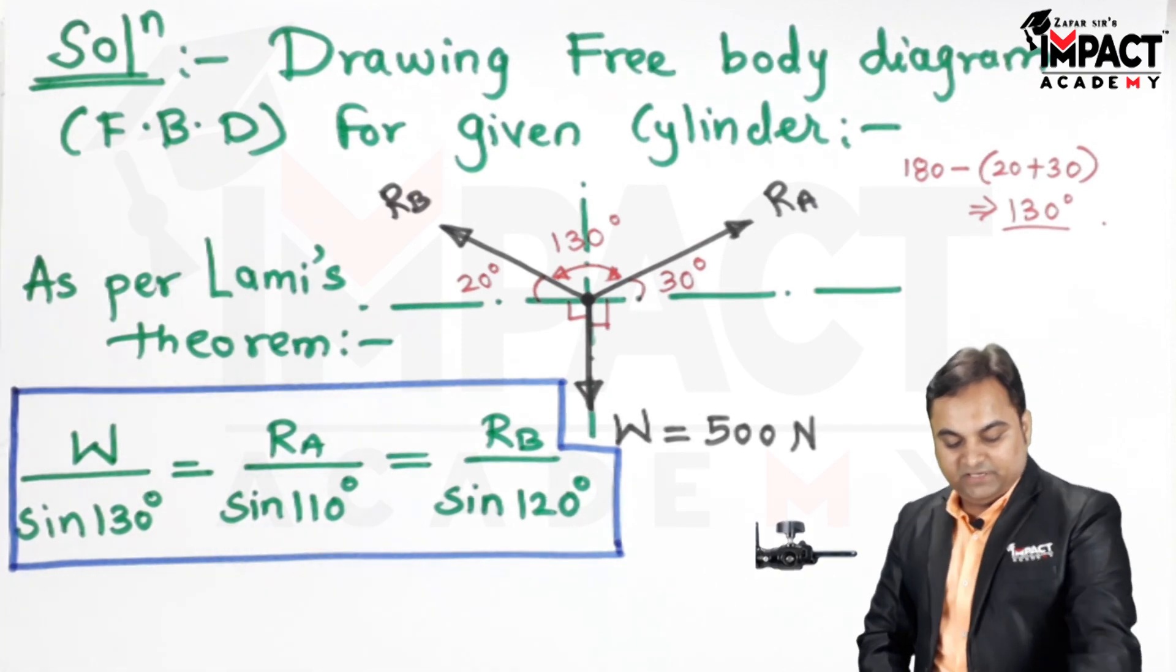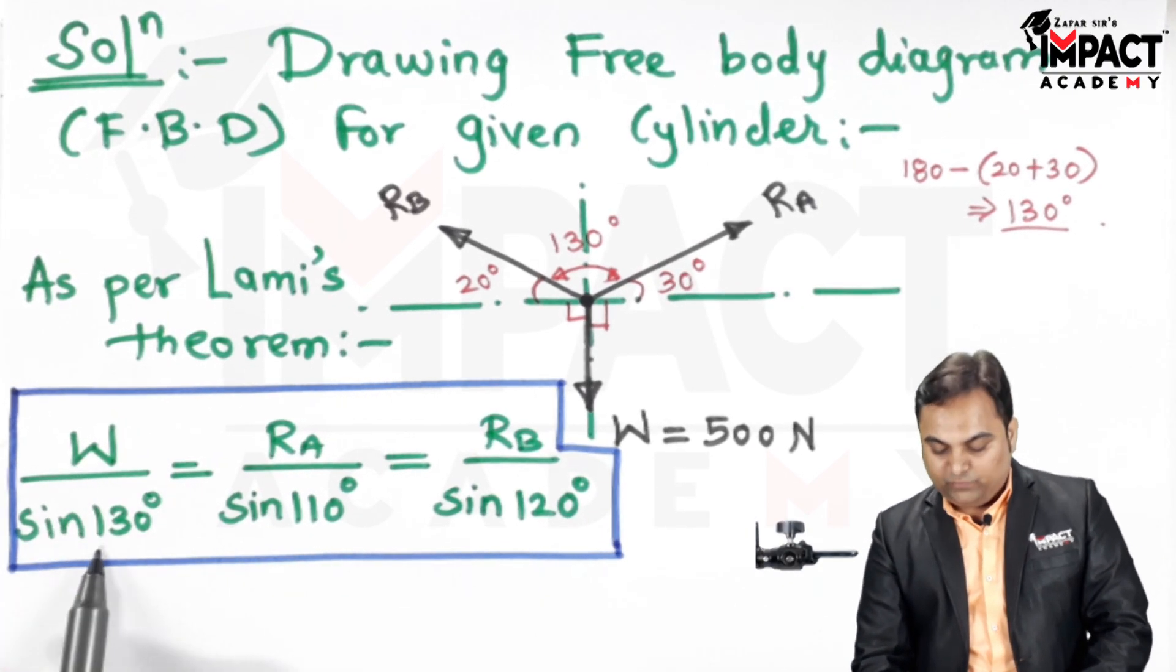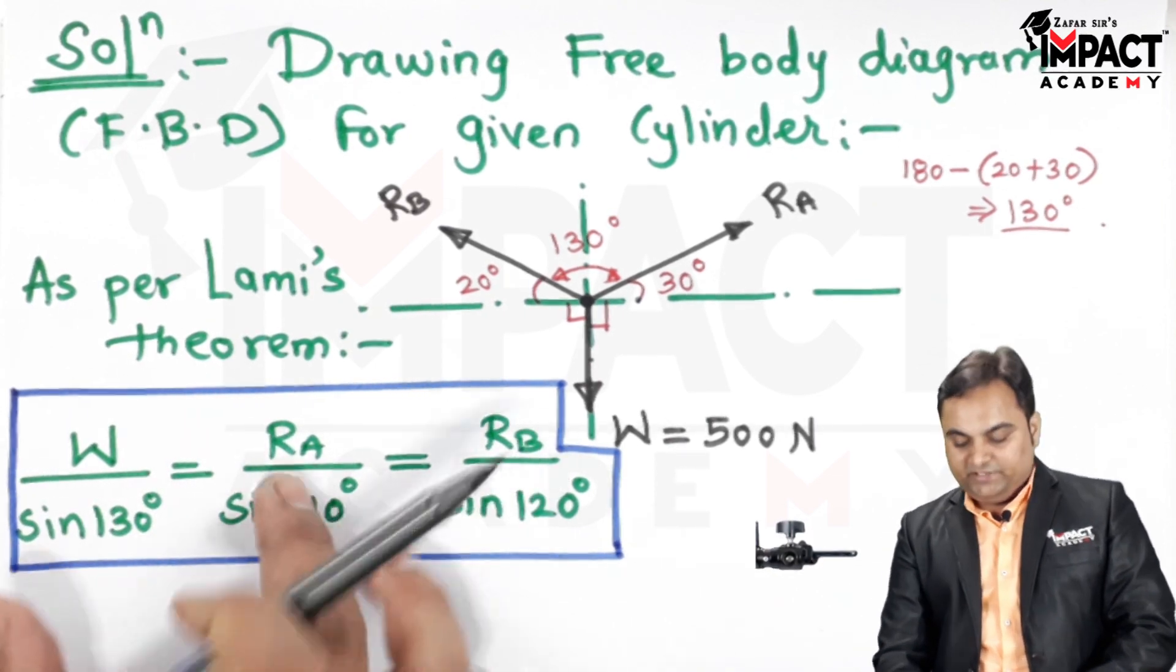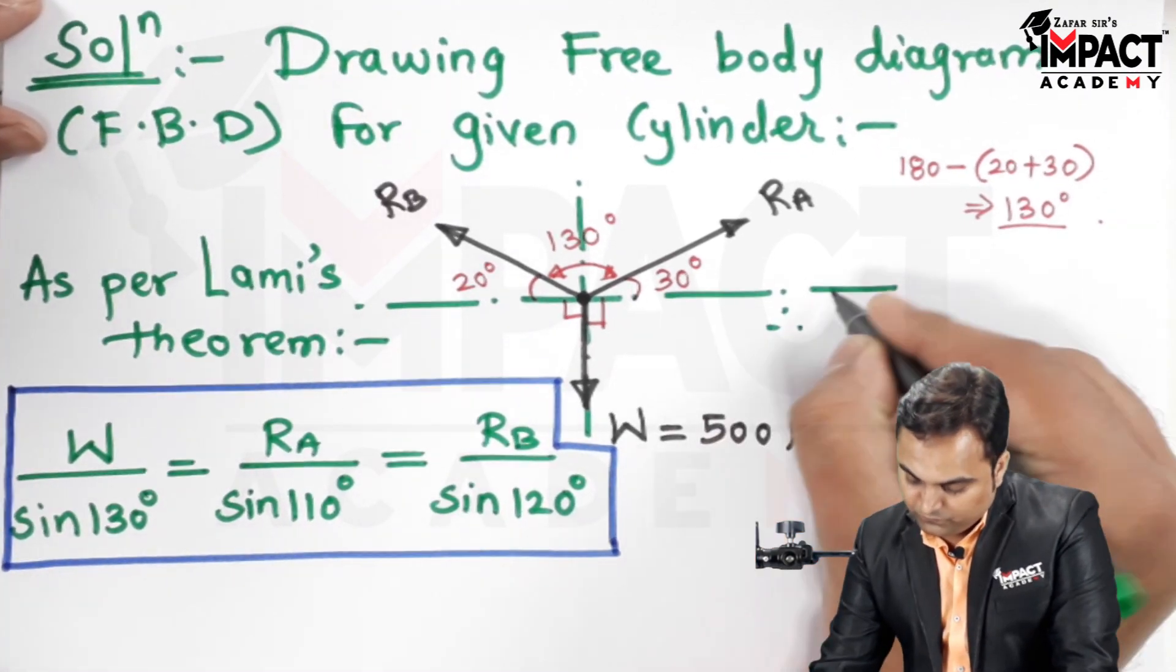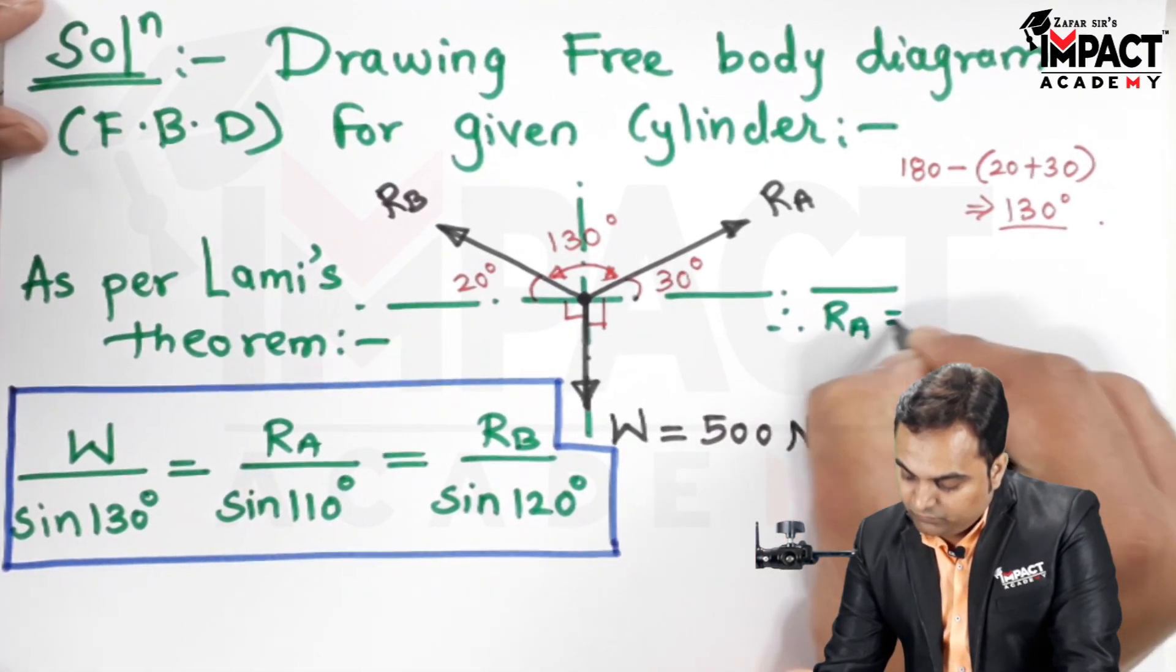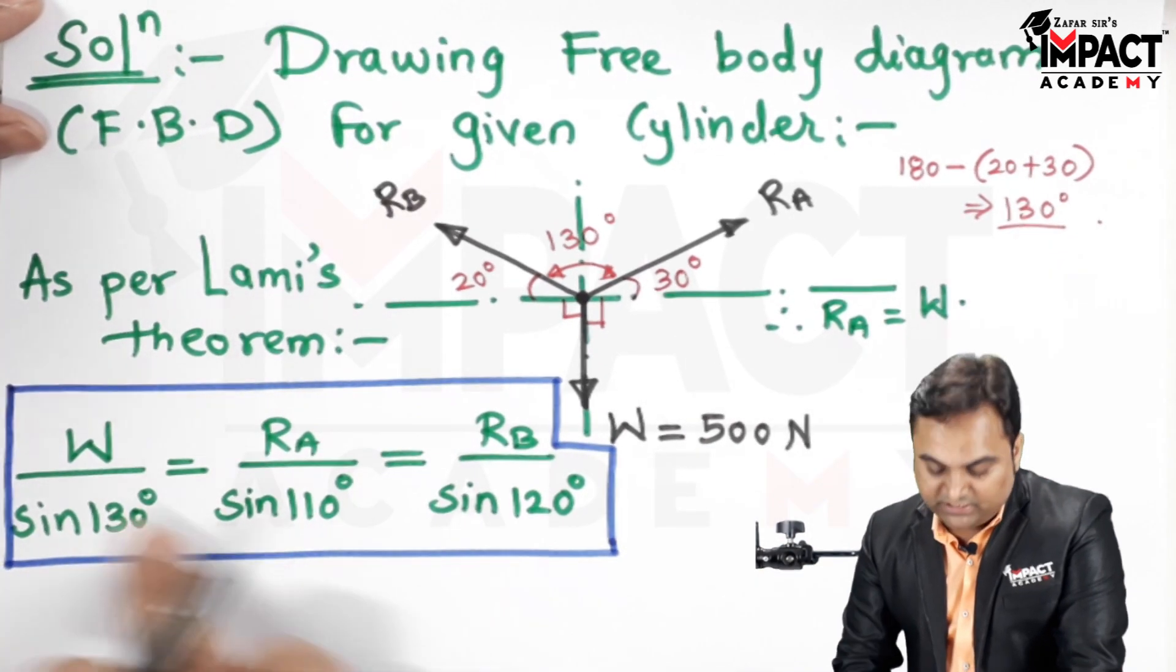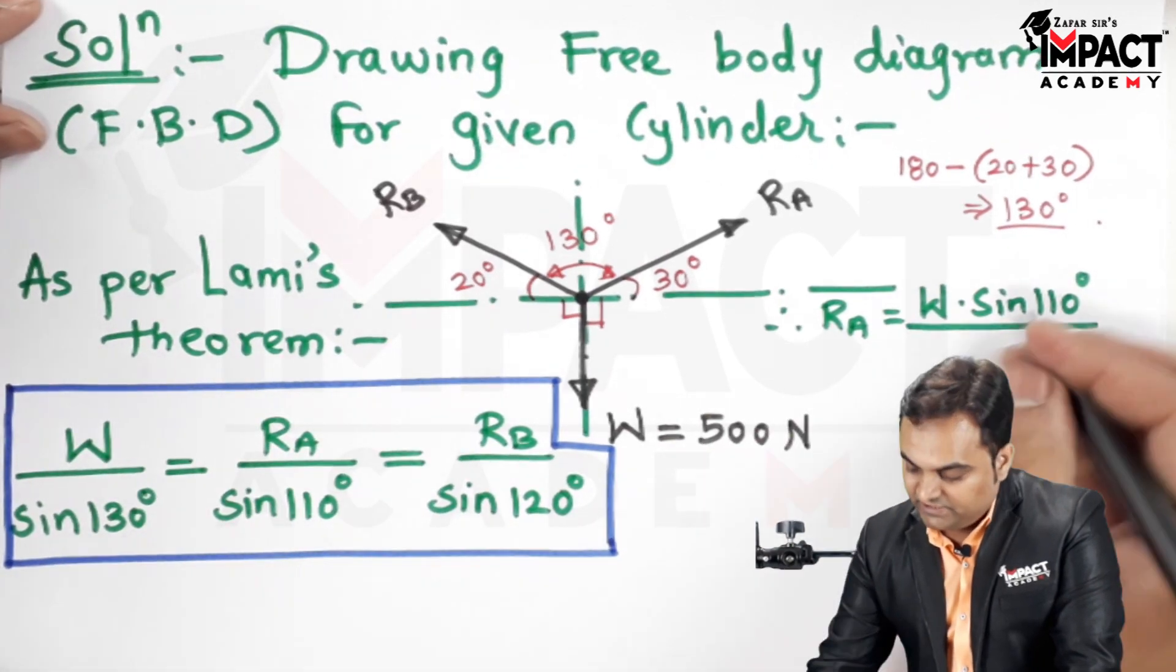So here I have applied Lami's theorem. Now since W is known, sin 130, sin 110 are known, by using the first part we can get RA. So therefore RA will be equal to W into sin 110 divided by sin 130.